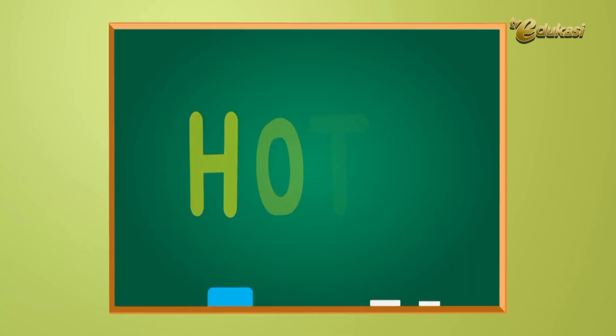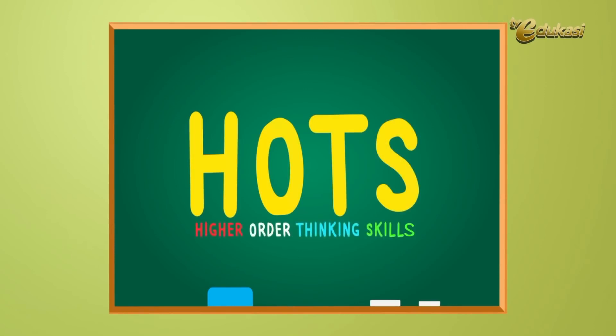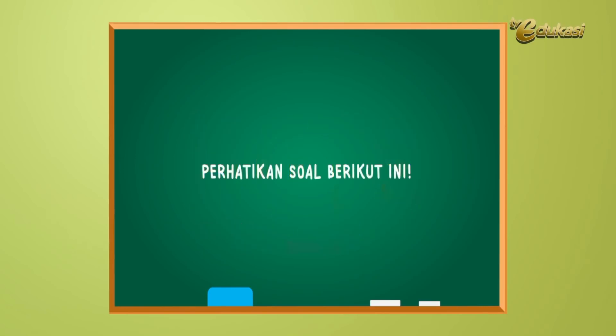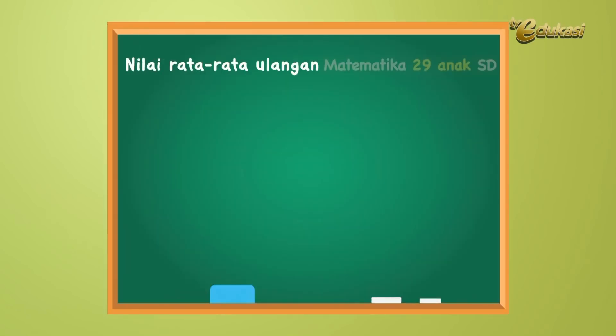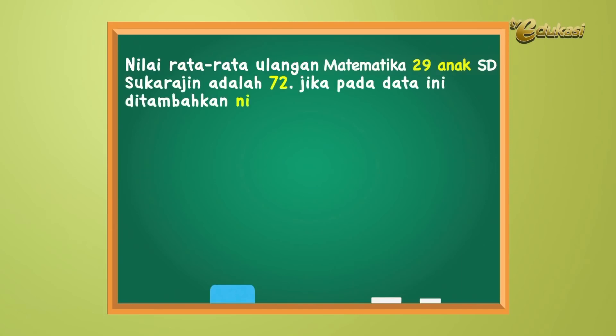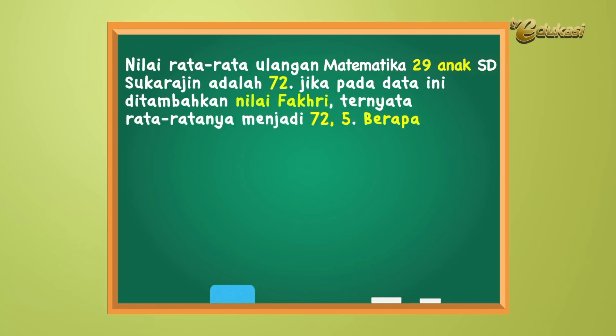Baik, anak-anak. Bapak sekarang akan memberikan soal tentang rata-rata berbentuk HOTS atau Higher Order Thinking Skill atau berpikir tingkat tinggi. Perhatikan soal berikut ini: nilai rata-rata ulangan matematika 29 anak SD Sukarajin adalah 72. Jika pada data ditambahkan nilai PAKRI, ternyata rata-ratanya menjadi 72,5. Berapakah nilai PAKRI? Nah, soalnya menarik ya.